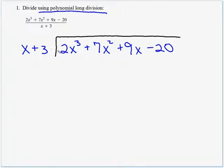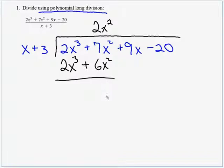So here, I got a 2x cubed. I want to match that. What times x is 2x cubed, or 2x cubed divided by x is what? Well, that would be 2x squared, the first term of our solution. 2x squared times x is 2x cubed, plus 2x squared times 3 is 6x squared. And remember here, we subtract. 7 minus 6 is 1, x squared, bring down the 9x.